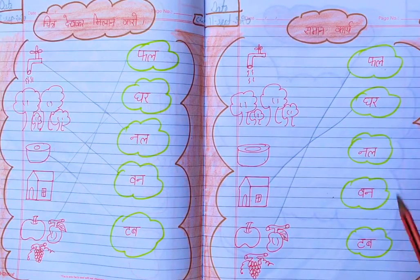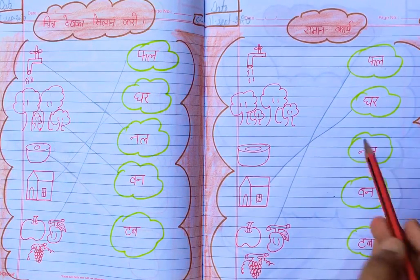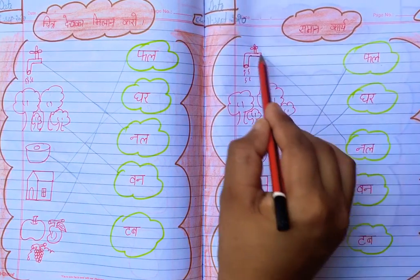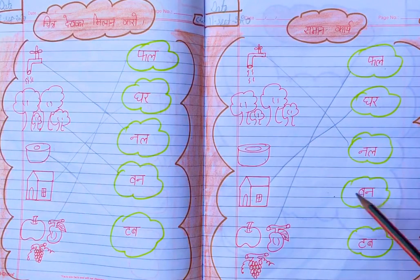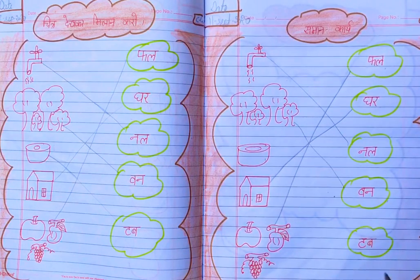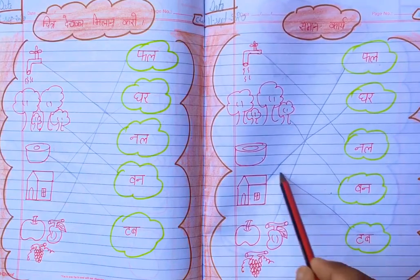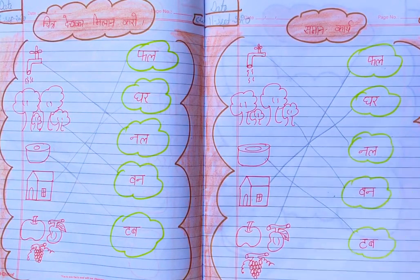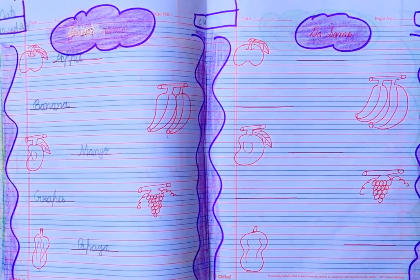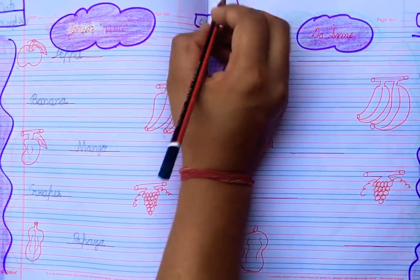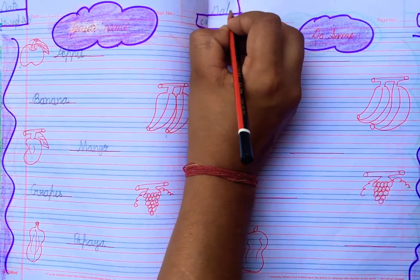Match the घर. Where is नल? Match the नल. Where is वन? Match the वन. तब को मैच कीजिए। Okay students, do the same in your Hindi notebook.